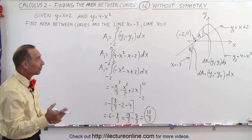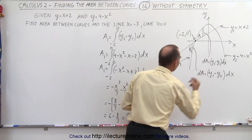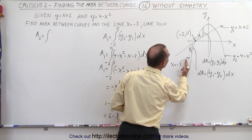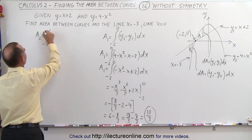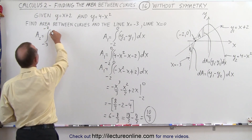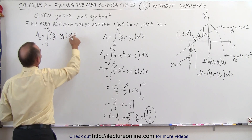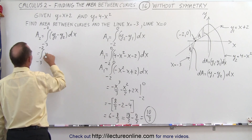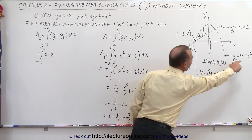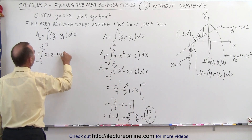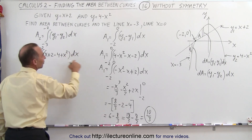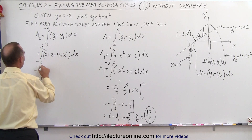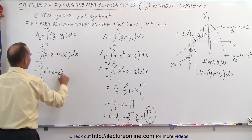Now we'll do the same for A2, but notice in that case the dA has the y's reversed. So A2 is equal to the integral with limits now going from x equals negative 3 to x equals negative 2, of y1 minus y2 times dx. So that's the integral from negative 3 to negative 2 of: y1 is x plus 2, minus y2 which is 4 minus x squared, giving minus 4 plus x squared. That simplifies to the integral from negative 3 to negative 2 of x squared plus x minus 2 times dx — the same integrand as before but with all the signs reversed.